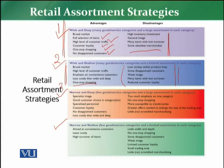The third retail strategy method is the narrow and deep assortment strategy. In this strategy, few goods and service categories are offered; however, there is a large assortment in each category. So there is less width but more depth in each category in this particular assortment strategy.